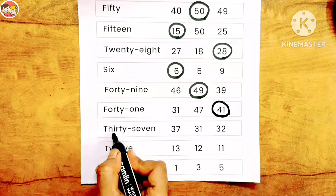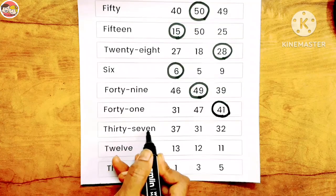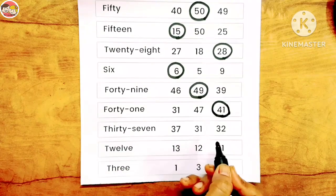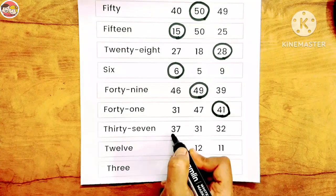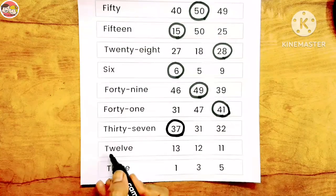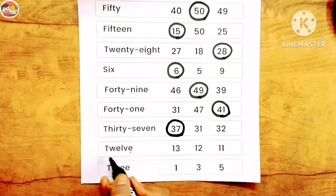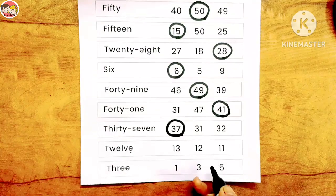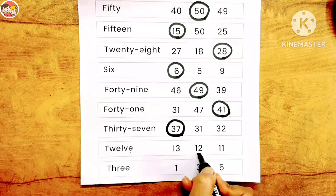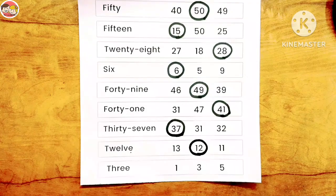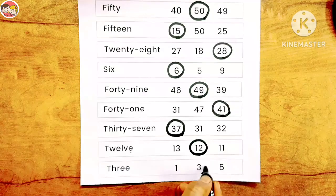Next: T-H-I-R-T-Y S-E-V-E-N, 37. We need to find number 37. Where is 37? Yes, very good — this is 37. Next: T-W-E-L-V-E, 12. This one is 12. Next: T-H-R-E-E, 3. Where is number 3? It's very simple — here it is. Let's make a circle on it. Our worksheet is done.